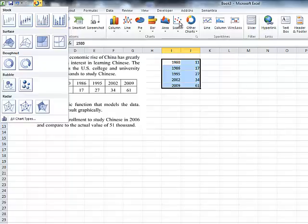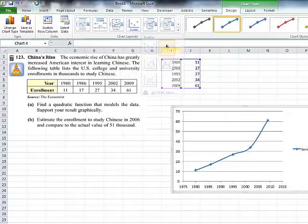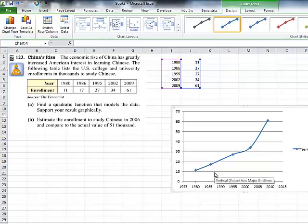And then we're just going to insert a scatter plot. And then it tells you what kind. I think I like the kind where it's connected. Scatter with smooth lines and markers. That doesn't look too parabolic, but we'll see how close that we can get.